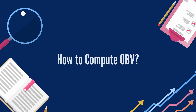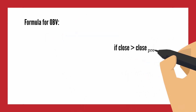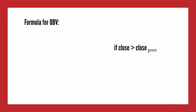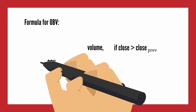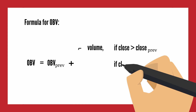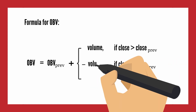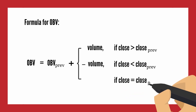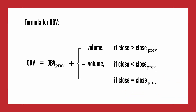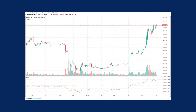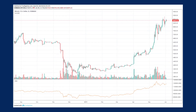To calculate OBV, we need to implement the following three rules: if today's closing price is higher than yesterday's closing price (positive), then add the volume to the prior volume; if today's closing price is lower than yesterday's closing price (negative), then subtract the volume from the prior total; if today's closing price equals yesterday's closing price, the OBV remains unchanged.